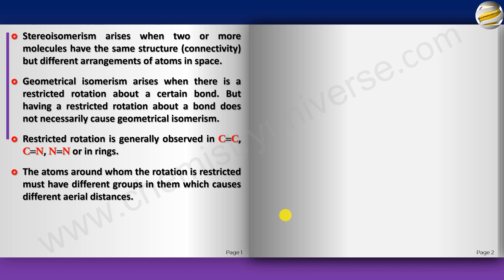Consider a C=C double bond. Carbon has a valence of four, so these two carbons must also be connected to two more groups. Let's say one carbon has groups A and B, and the other carbon also has groups A and B — or they can be C and D as well.